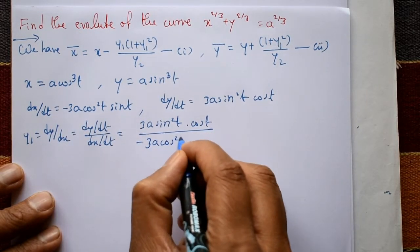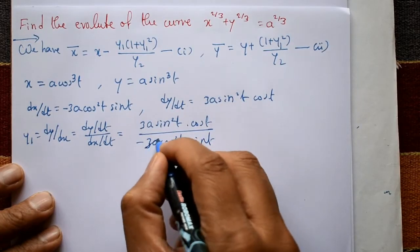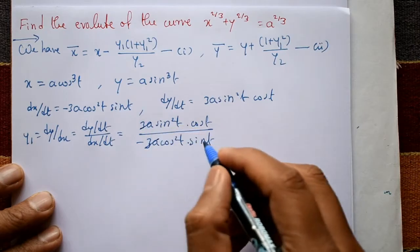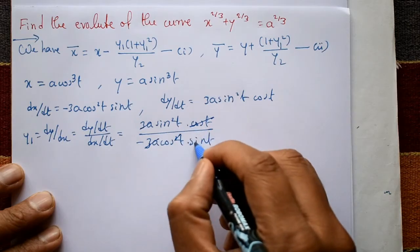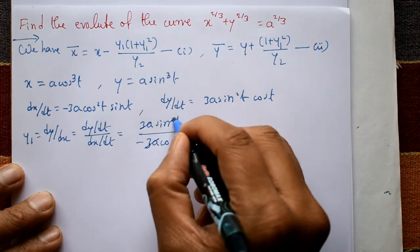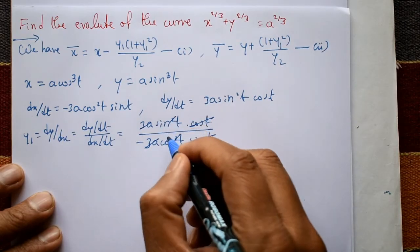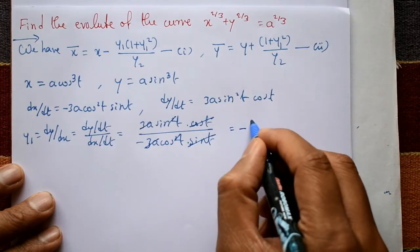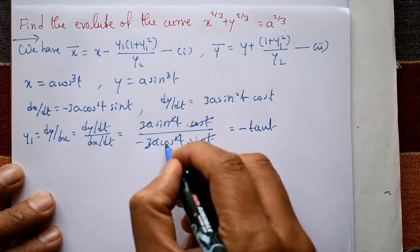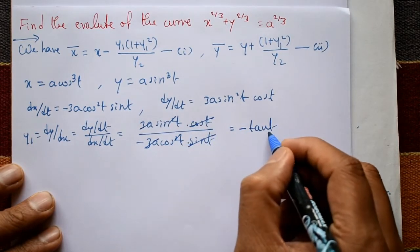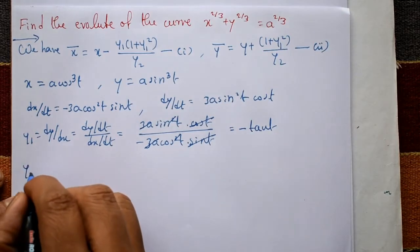Simplifying: the 3a terms cancel, one cos(t) cancels, one sin(t) cancels, leaving sin(t)/cos(t) with a negative sign. Therefore y1 = -tan(t).